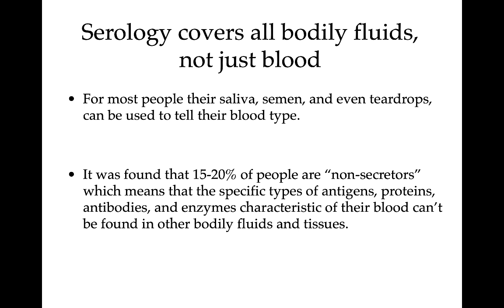So from these notes: if you find a stain at a crime scene, there are three steps — is it blood, is it human blood, and can we take the first step to match that blood to a person by testing blood type? In future notes we'll cover DNA testing, and we'll also cover blood spatter analysis. Thank you very much for watching, and I'll talk to you next time.